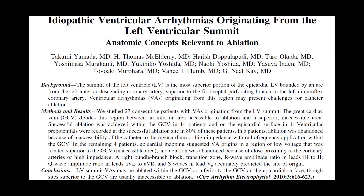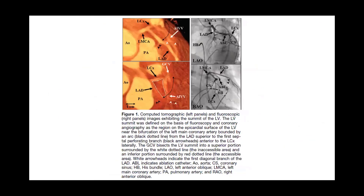Here is the anatomic concept of PVCs originating from the left ventricular summit, relevant to ablation. The summit of the LV is the most apical epicardial portion of the LV, bounded by the left main coronary artery from the LV to the first septal perforating branch. As seen in the figure — CT on the center, LV summit on the left — the LV summit is bounded near the bifurcation of the left main, from the LV to the first septal perforating branch, indicated by the black arrowhead, anteriorly.